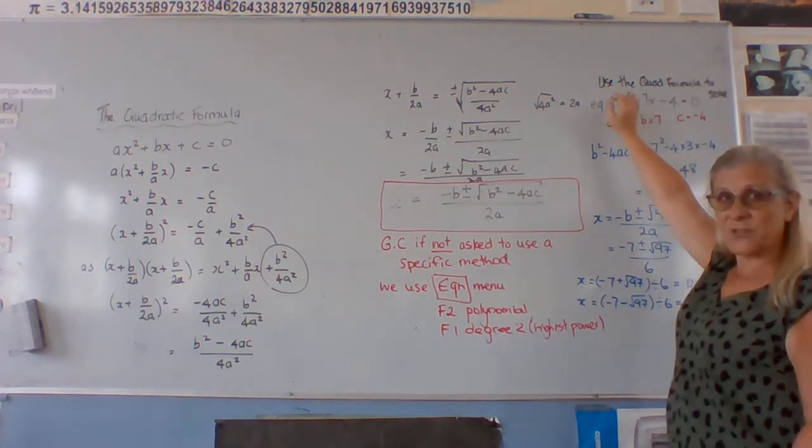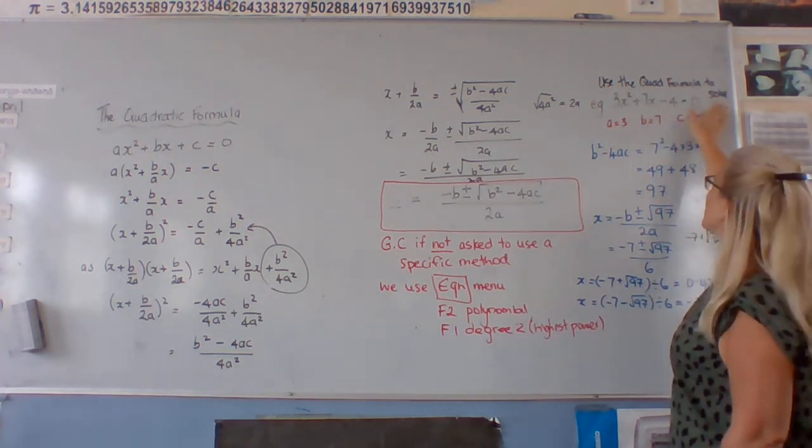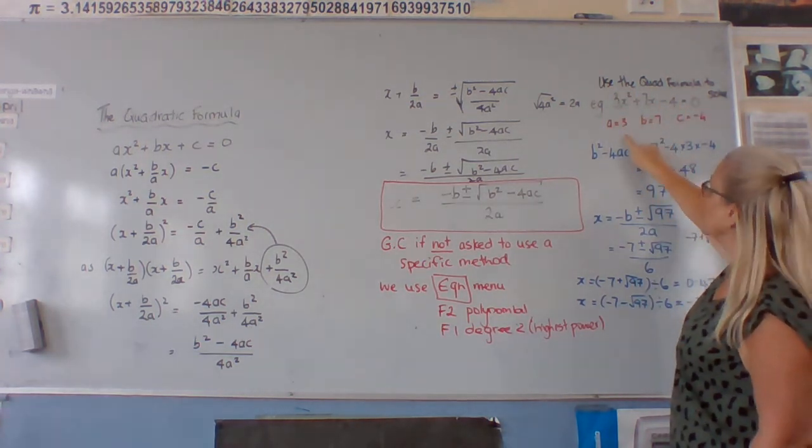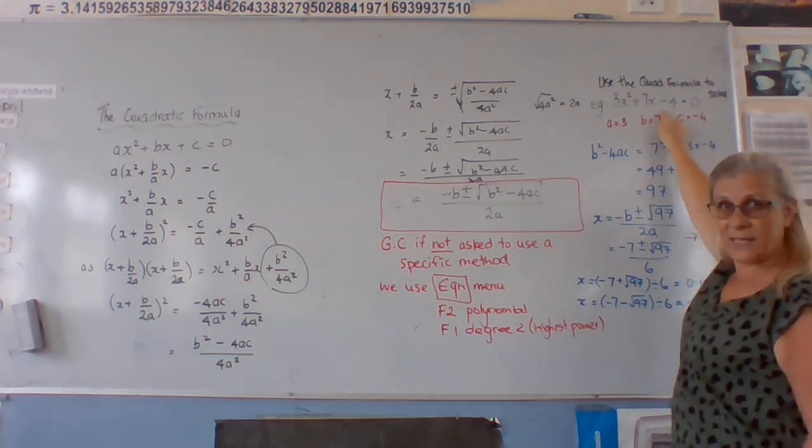Let's have a look at an example. So in this example, they've told us to use the quadratic formula to solve this. We've got a equals 3, b equals 7, and c equals negative 4.